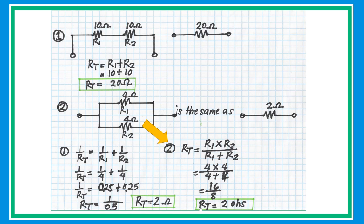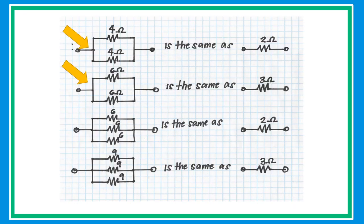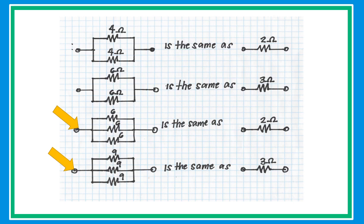Substitute the values to get the equivalent resistance. If two resistors connected in parallel have the same value, the equivalent resistance is simply half that value. For example, two 4-ohm resistors give 2 ohms, and two 6-ohm resistors give 3 ohms. If three or more resistors with the same value are in parallel, just divide the resistor value by the total number of resistors — for instance, 6 ohms divided by 3 equals 2 ohms. This works for 4, 5, or 10 equal-value resistors in parallel as well.